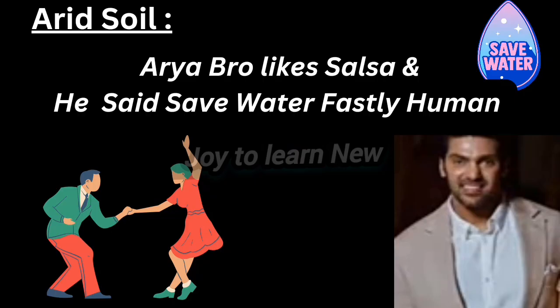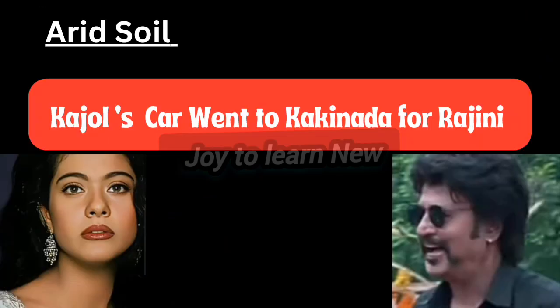That's all. Let me repeat the shortcuts once again — you also try to recall what we discussed. The first shortcut is: 'Arya bro likes salsa, he said save water fastly, humans.' The second one is: 'Kajol's car went to Kakinada for Rajini.'